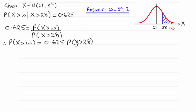Now in the usual way I need to standardise this value of 28. So we can pick up on the fact that this is 0.625 multiplied by the probability of our random variable z, our standardised random variable z being greater than the observed value, which is 28 minus the mean, which is 21, all divided by the standard deviation, which is 5.